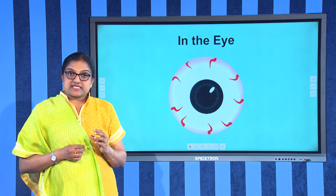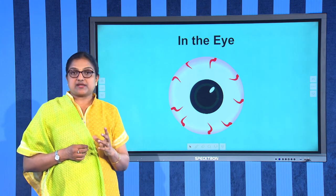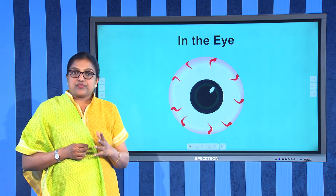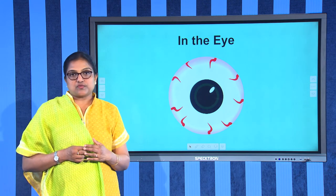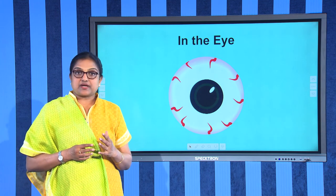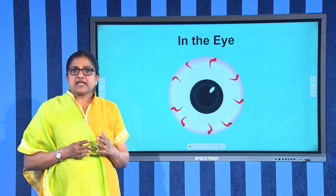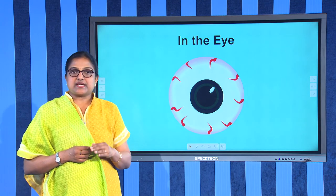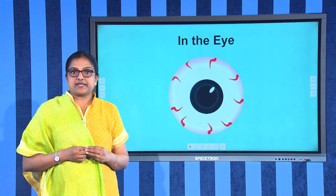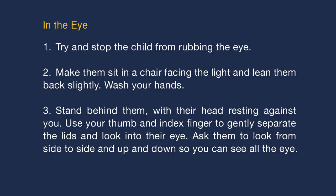Foreign bodies in the eye usually stick to the outer surface of the upper eyelid, making the eye painful, watery, and red. Never try to remove anything that is on the colored part of the eye or stuck in the eyeball. If the child has such an injury, cover their eye with a sterile eye pad and take them straight to hospital. Try to stop the child from rubbing the eye.